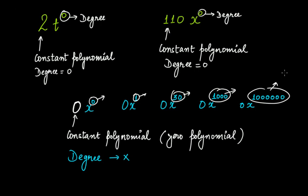It's not defined. For the polynomials 2 and 110, the degree has to be zero only — that's the only way you get back those numbers. But for the zero polynomial, you can take as many exponents as you want and you'll always get back zero. So the degree is undefined. That's why we say the degree of a zero polynomial is undefined.